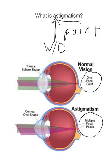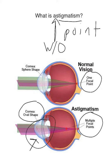The reason for this is because of the cornea. The cornea is oval-shaped in astigmatism. In a normal eye, the cornea is more of a sphere shape.